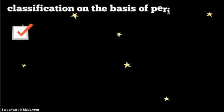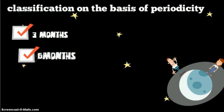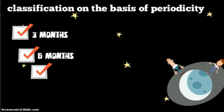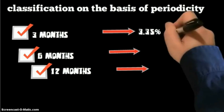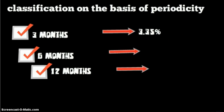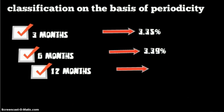The classification on the basis of periodicity is for 3 months, 6 months, and 12 months. The basic rate for each period is 3.35% for 3 months, 3.39% for 6 months, and 3.41% for 12 months.